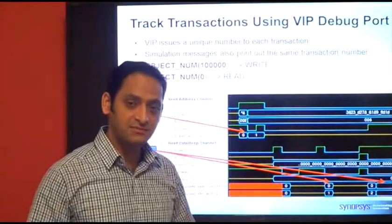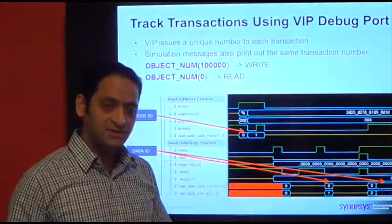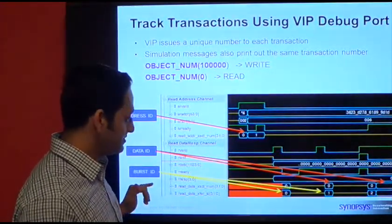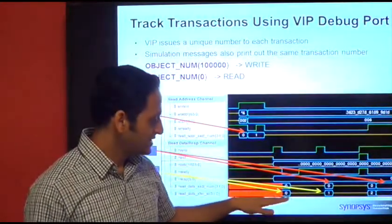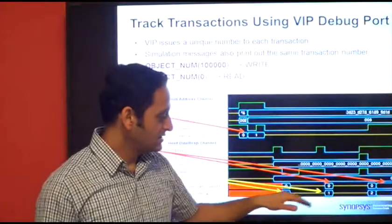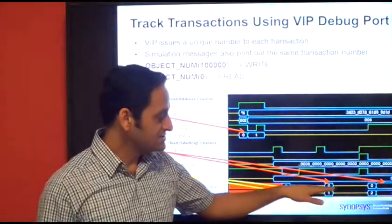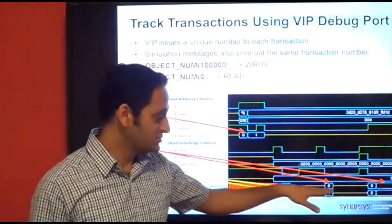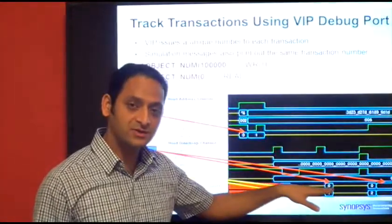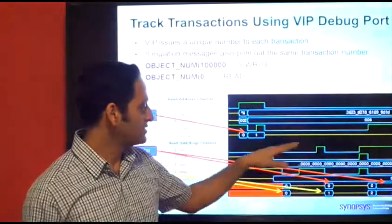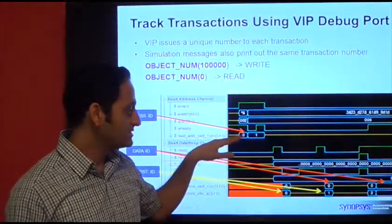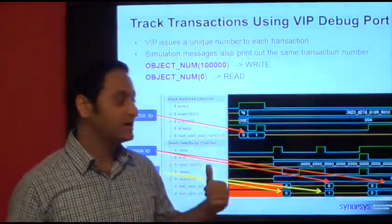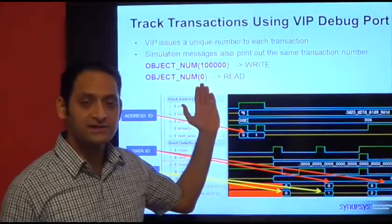The data phases corresponding to that address phase of the transaction can be seen using another vector which shows the same number. The same number is used across address, data, and even further within the data beats which are part of that same transaction — they use 0, 1, 2 numbers — and the data phase number remains constant during those beats, which shows they all correspond to the same data object and the same address phase of that particular transaction. For write transactions, these unique numbers start from 100,000, and in the case of read they start from 0.